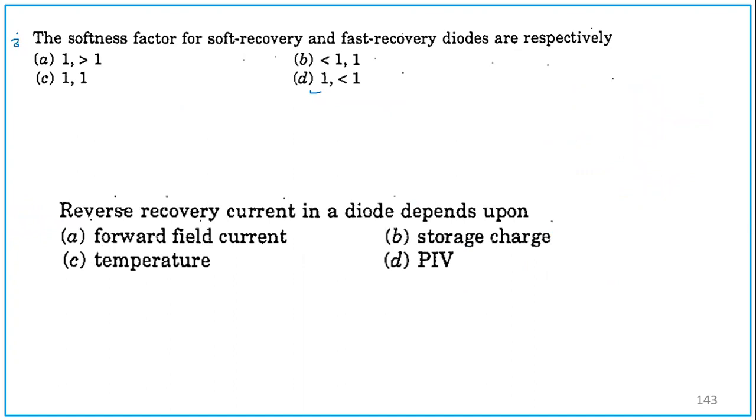Question number 3 is based on softness factor. What do you mean by softness factor? For different types of diodes, you have studied fast recovery diode, then soft recovery, soft diode. What is softness factor? Softness factor is the ratio of TB by TA. If a diode has a softness factor equal to 1, it is called soft recovery. S equals 1 means it is soft recovery. For softness factor less than unity, it is known as fast or snappy recovery. S is less than 1 means it is called fast or snappy recovery diodes. These are the two cases. Option D is the answer.